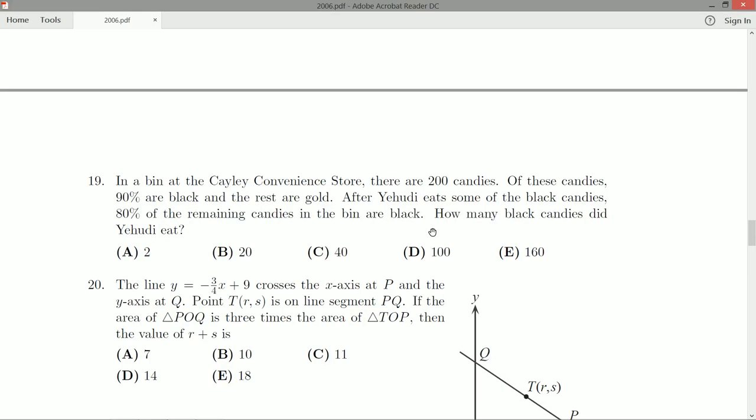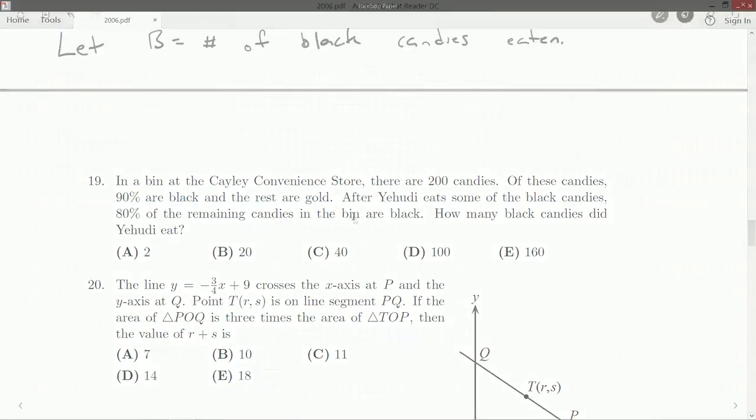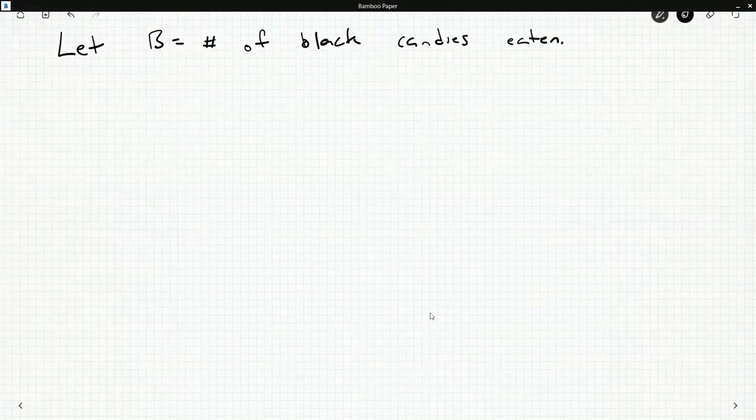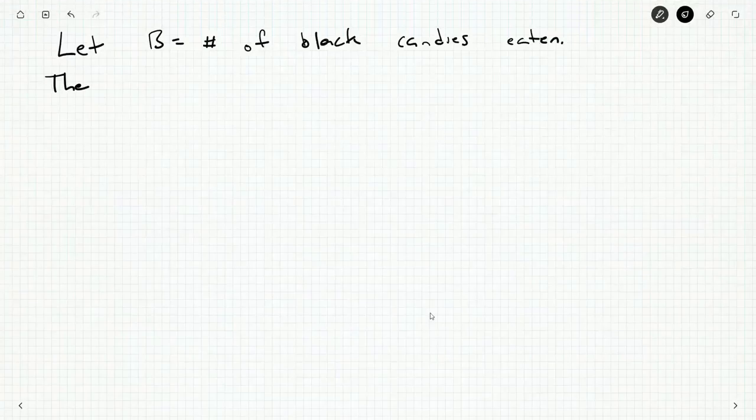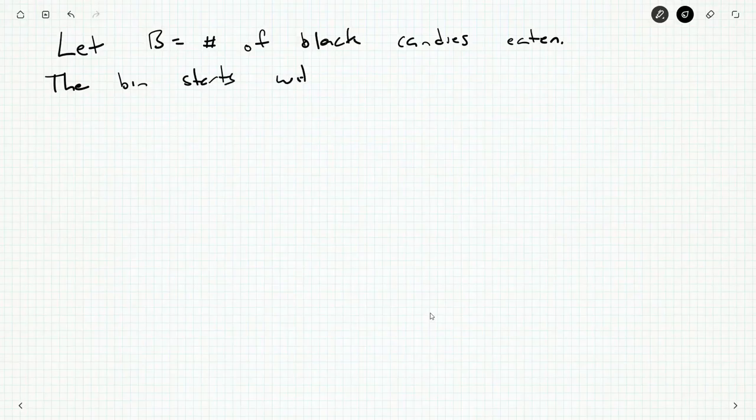What we're going to do is we're going to set up some equations to solve for B. First let's calculate how many black there are and how many gold. I already did it verbally, but the bin starts with 90% of 200 is 180 black and 20 gold.